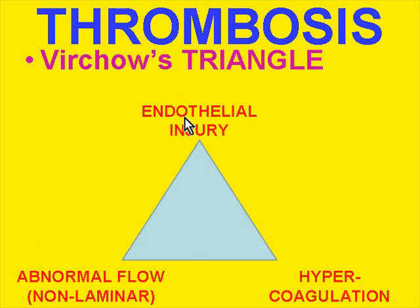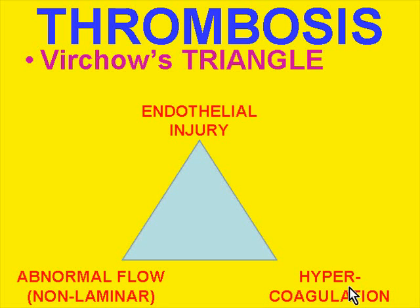If your endothelial cells are injured or disrupted, anatomically or physiologically, that is a main thrust for thrombosis. If blood flow is non-laminar — perhaps static, sluggish, or has a lot of eddy currents — that's another contributor towards thrombosis inside a blood vessel. All of the things that would accelerate coagulation from the intrinsic and extrinsic pathways and their controls is another major contributor. That's Virchow's triangle, and it has lasted until today.